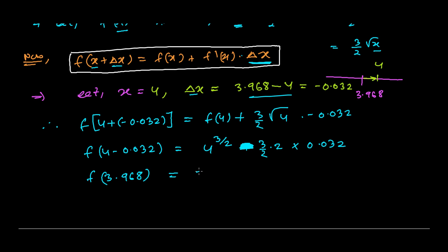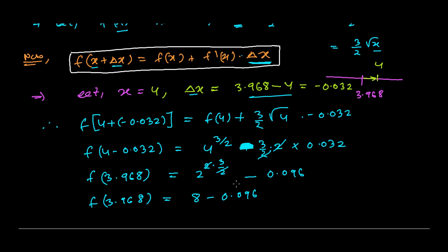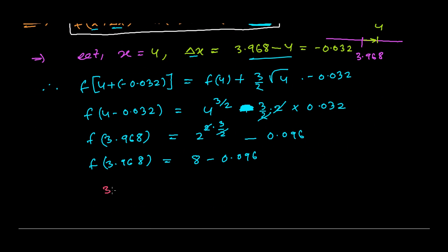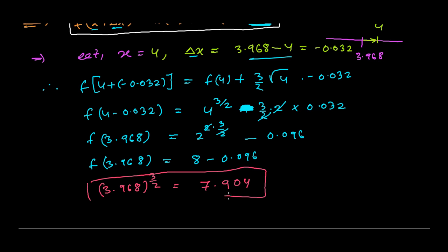Now, 4 to the power 3/2 = (2²)^(3/2) = 2³ = 8. Then (3/2)·2·0.032: the 2s cancel and 3 × 0.032 = 0.096. So f(3.968) = 3.968^(3/2) = 8 − 0.096 = 7.904. This is our required approximate value.